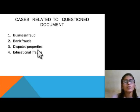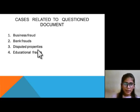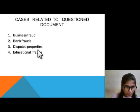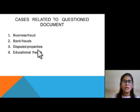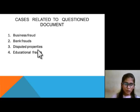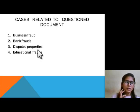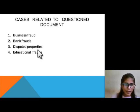In property disputes, people register property in their name fraudulently — sometimes the same property is sold 2-3 times. In education fraud, in any university or institution, people commit fraud for admission. We can identify these documents as well.